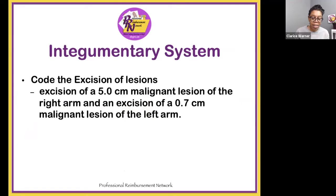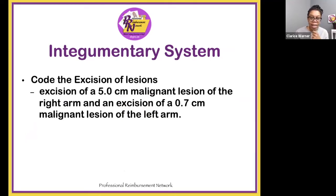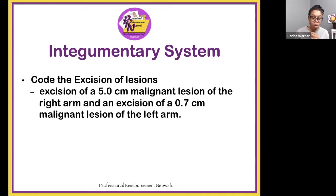We have an excision of a 5.0 centimeter malignant lesion of the right arm and an excision of a 0.7 centimeter malignant lesion of the left arm. We know the sizes, the morphology — they are malignant — and the anatomic sites: left arm and right arm. How many codes should we have? We should have two codes, as each excision is reported separately. The codes are 11606 and 11601. Should we have a modifier? Yes. We should add modifier 59 to 11601. Modifier 59 is used to indicate that a distinct procedure was performed on a different anatomic site.